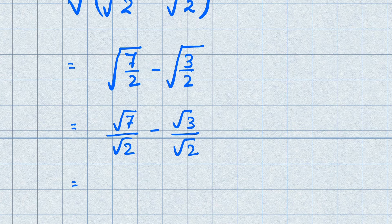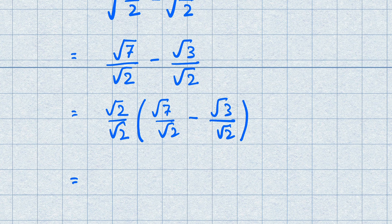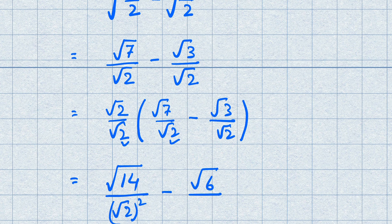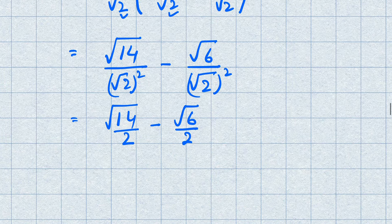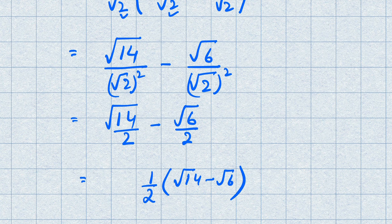We multiply and divide by √2. So √7/√2 becomes √14/2, and √3/√2 becomes √6/2. This gives us √14/2 minus √6/2, or (1/2)(√14 minus √6). This is our final answer.